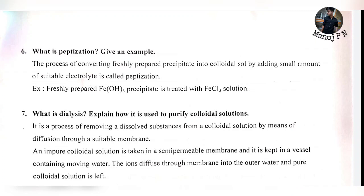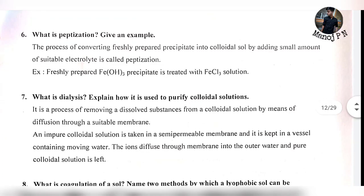What is peptidization? Give an example. Peptidization is the process of converting a freshly prepared precipitate into a colloidal solution by adding a small amount of a suitable electrolyte. For example, freshly prepared Fe(OH)₃ precipitate treated with FeCl₃ solution.